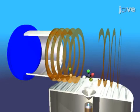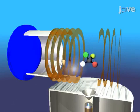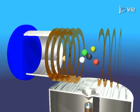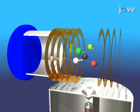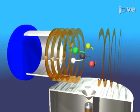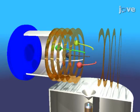A molecular beam enters the vacuum chamber through a nozzle and a skimmer. A laser beam crosses the molecular beam at right angles and leads to ionization and subsequent fragmentation. The electric field in the spectrometer guides the ions to the detector where the times and positions of their impacts are recorded.